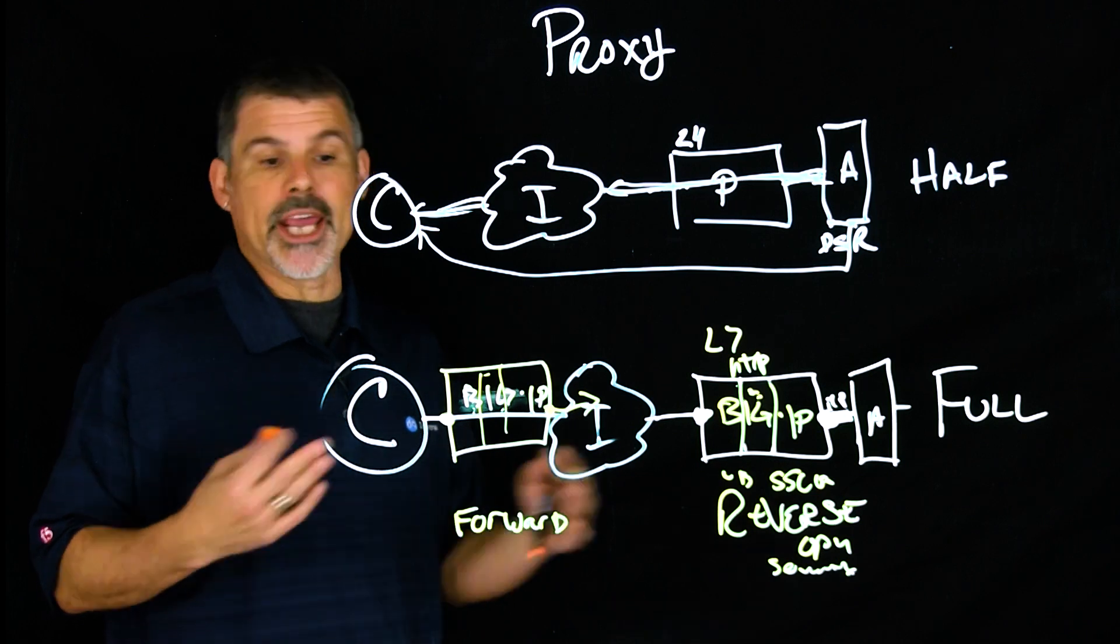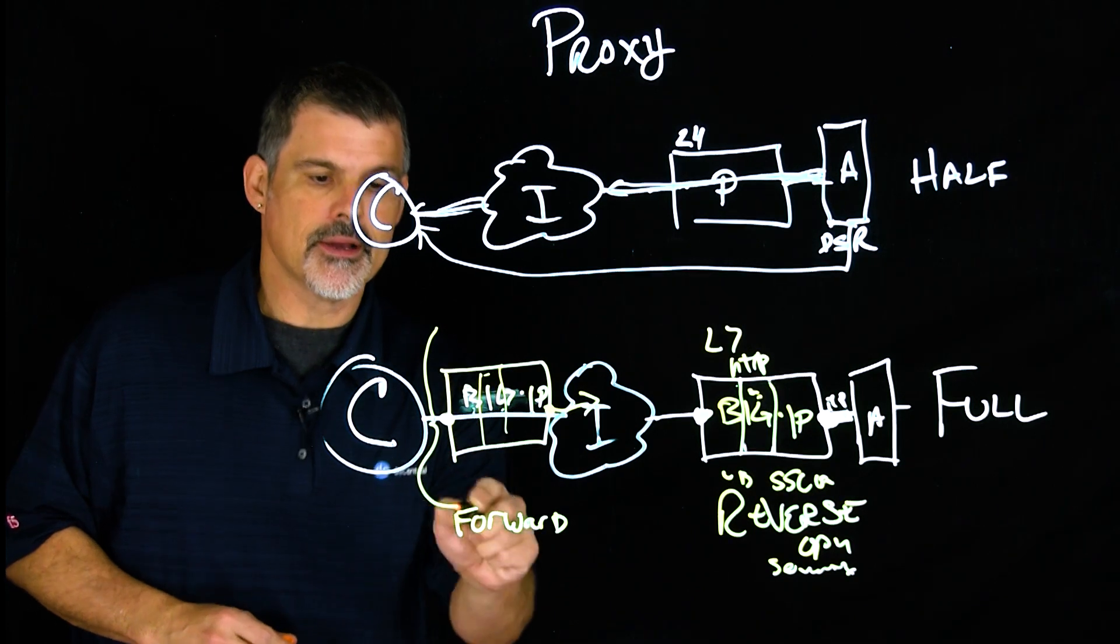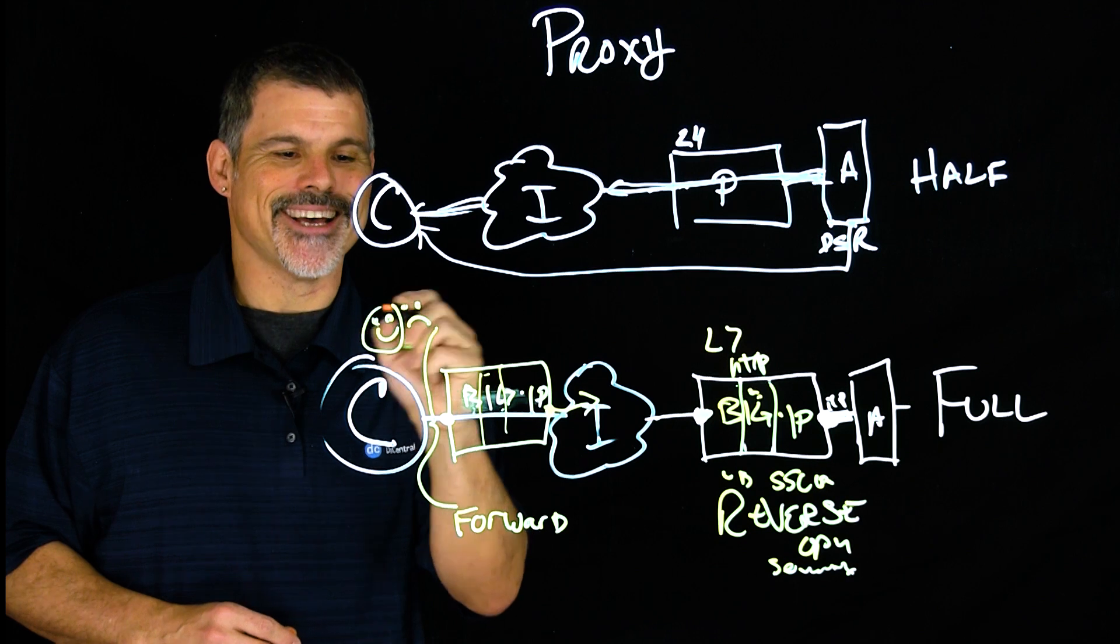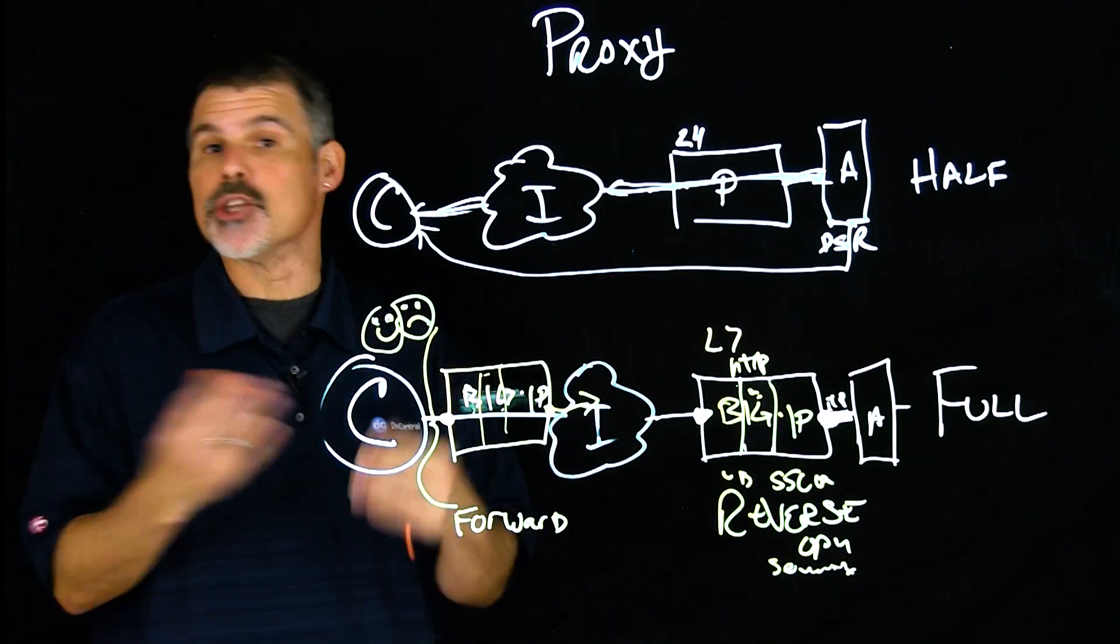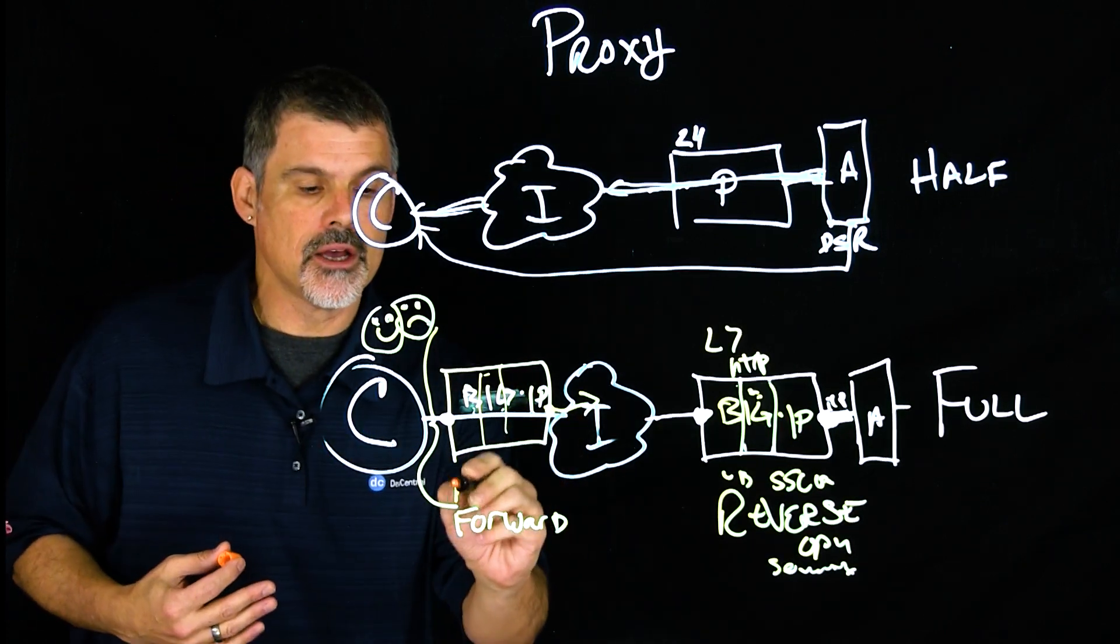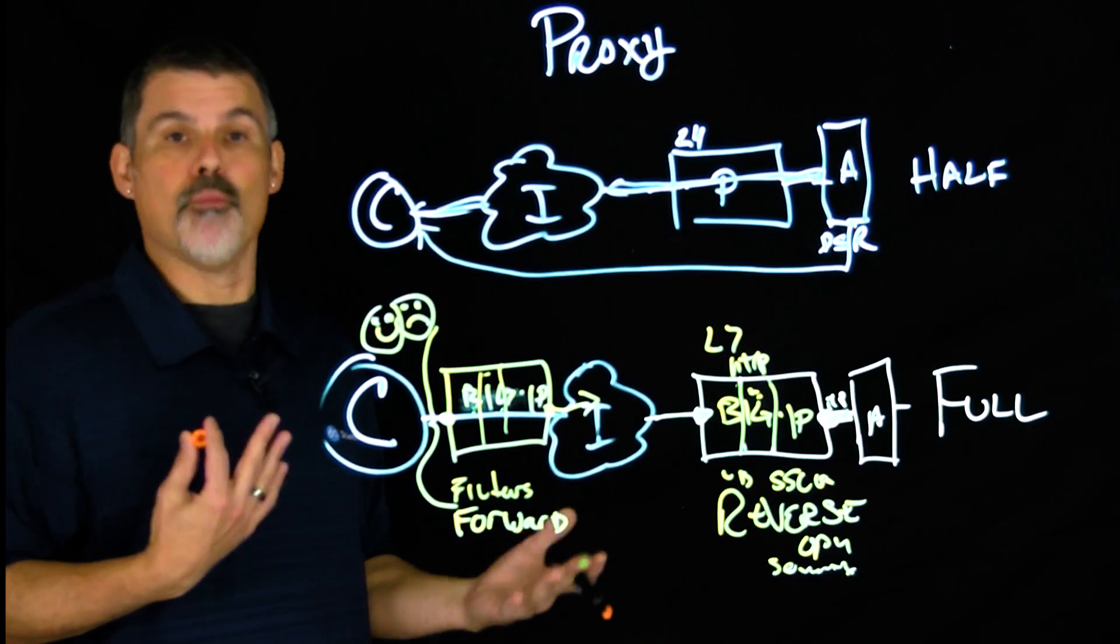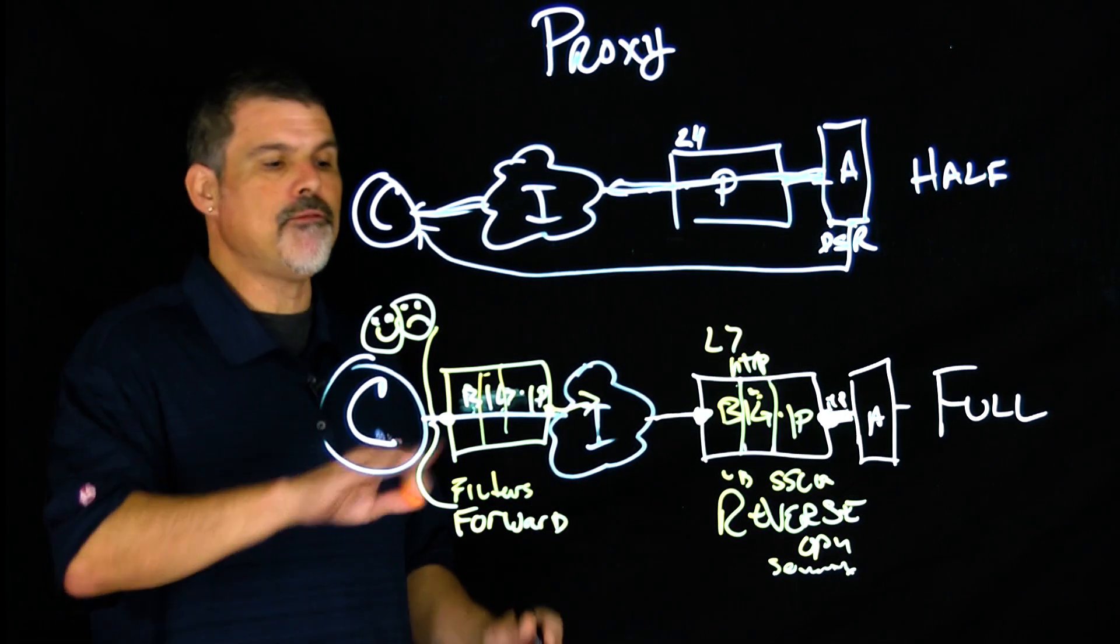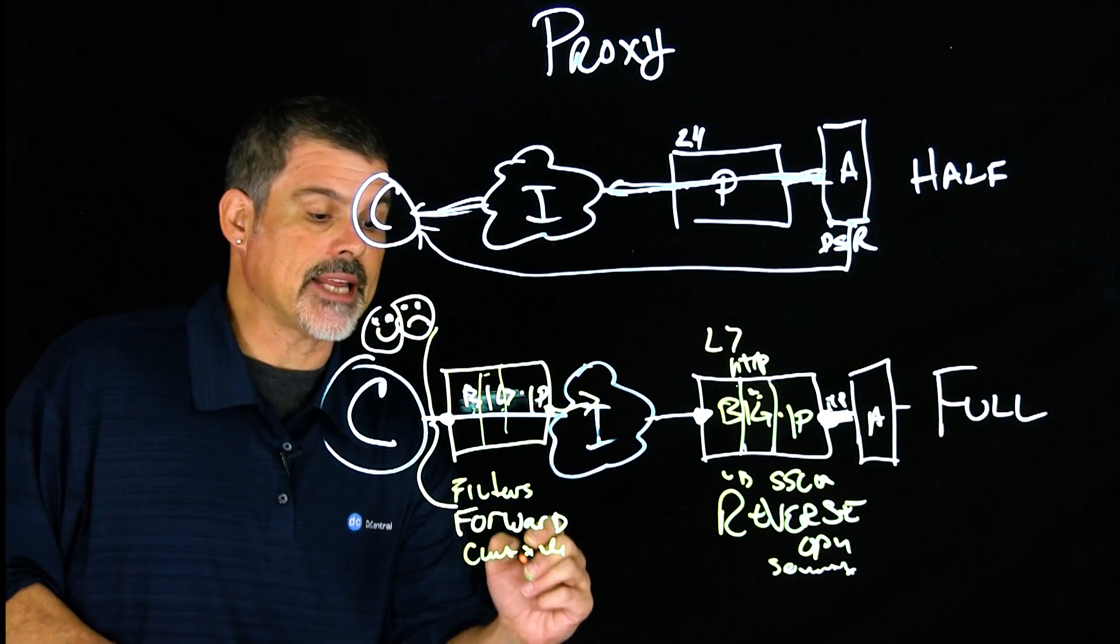And so in this situation, what it can do, having a forward proxy protecting your internal network, one, you can mask your internal resources with a forward proxy. You can certainly do filtering, outbound filtering. Maybe you want to block certain social media sites or particular time wasters there in the office. So filtering, forwarding, you can do client side caching.